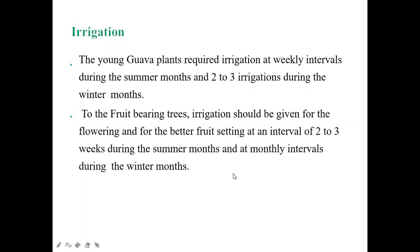Young plants can be irrigated at weekly intervals during summer months; only two to three irrigations are required during winter months. For fruit-bearing trees, irrigation should be given for better flowering and fruit setting at intervals of two to three weeks during summer and at monthly intervals during winter.